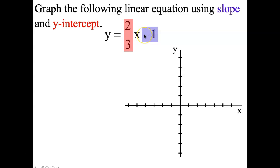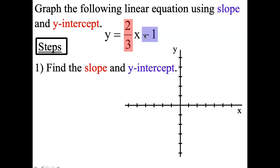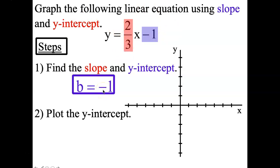When you graph, you start with the y-intercept. So here are the steps. Find the slope and y-intercept. Start with the y-intercept, which is negative 1, and then plot the y-intercept. There you go.